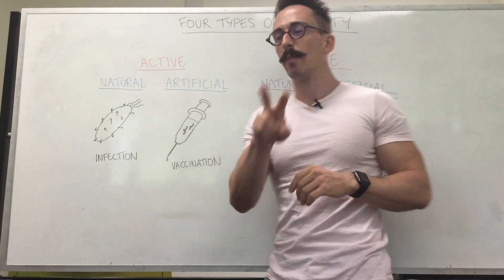To summarize, when it comes to acquired immunity, you can break it up into active processes where you make the antibodies or passive processes where you simply receive the antibodies. Both have naturally acquired and artificially acquired sources. So these are the four types of immunity.